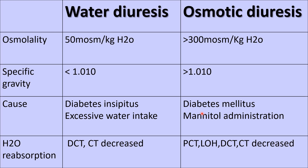Normally, glucose does not appear in the urine. When the transport maximum is exceeded, glucose appears in the urine. Along with glucose, water reabsorption is also affected. The increased load of glucose, sodium, and urea produces osmotic diuresis. Therapeutic administration of mannitol also produces osmotic diuresis.